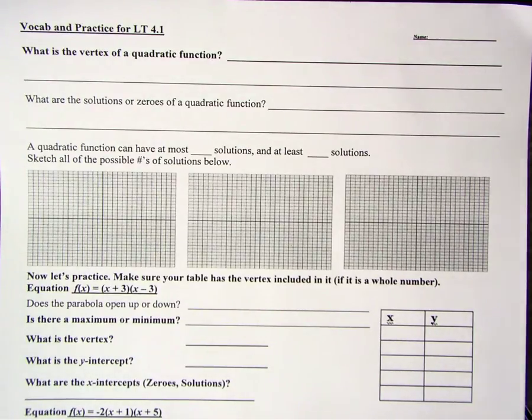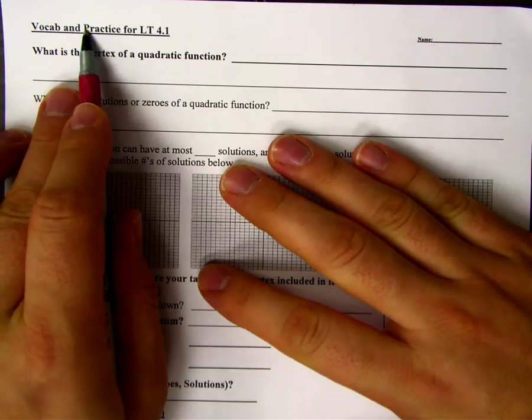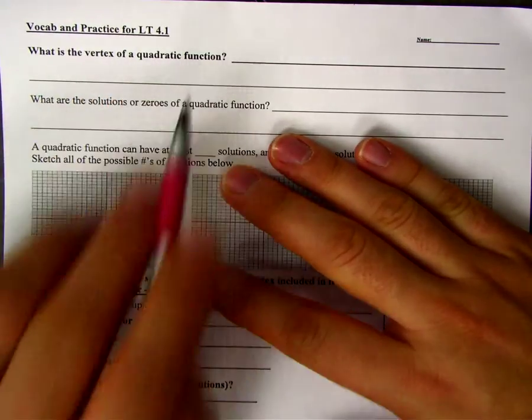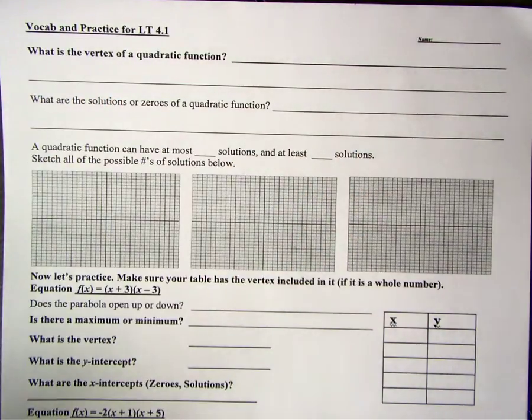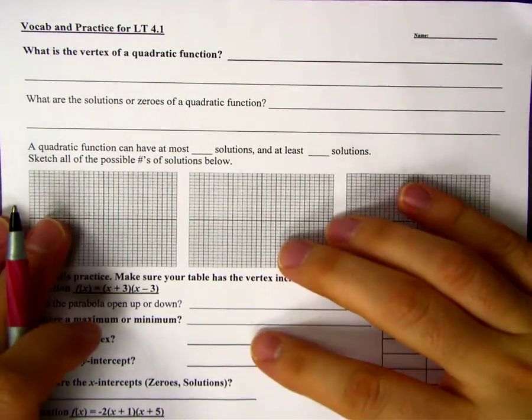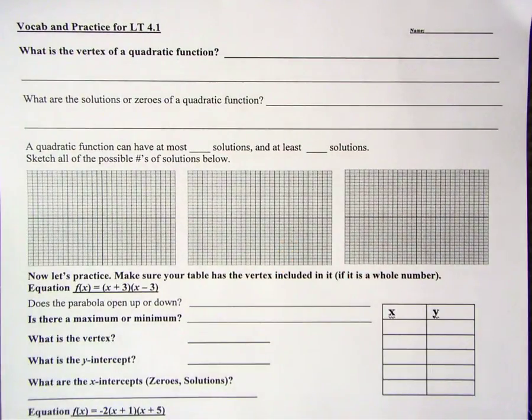All right, so you should make sure that you have this sheet right here, vocab and practice for learning target 4.1. It's going to be located on the green cabinet in the back, so make sure you grab that. What we're going to do is walk you through some of the vocab in the beginning here, and then we're going to maybe do one problem with you, and then we're going to let you practice the rest of them. So let's just start out with this.